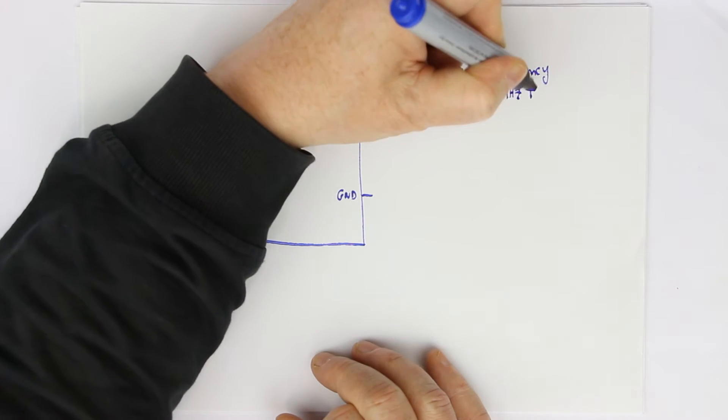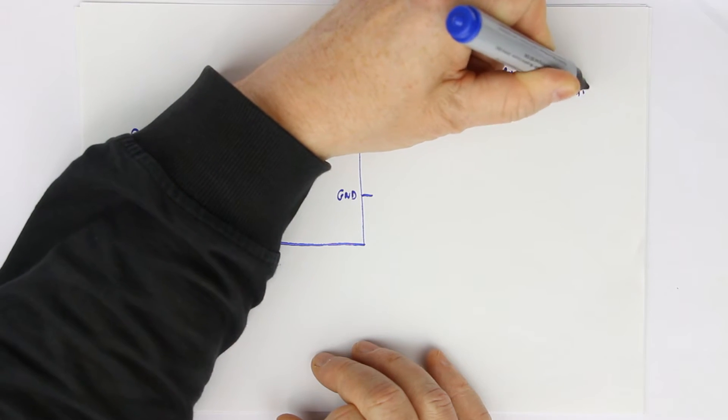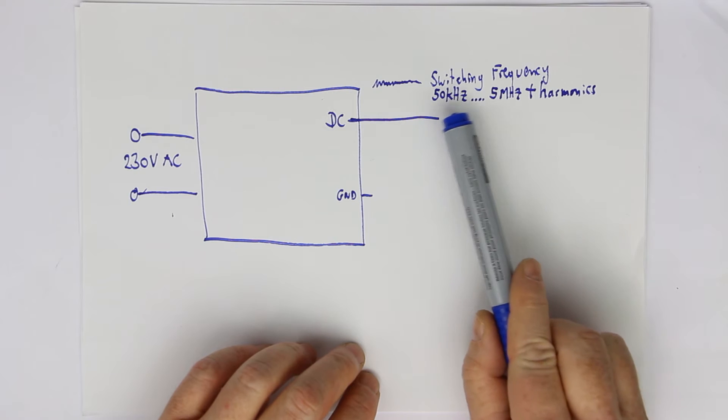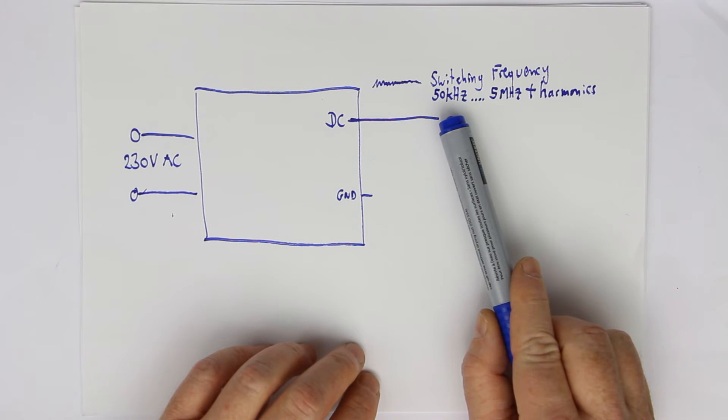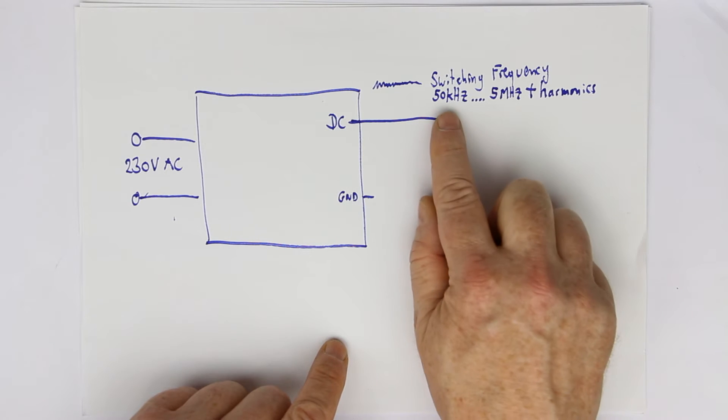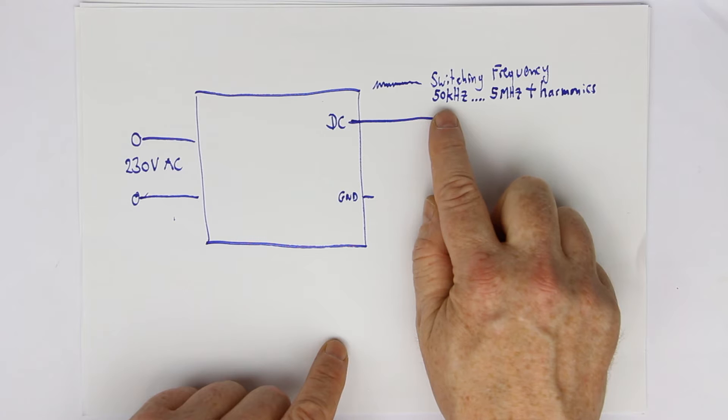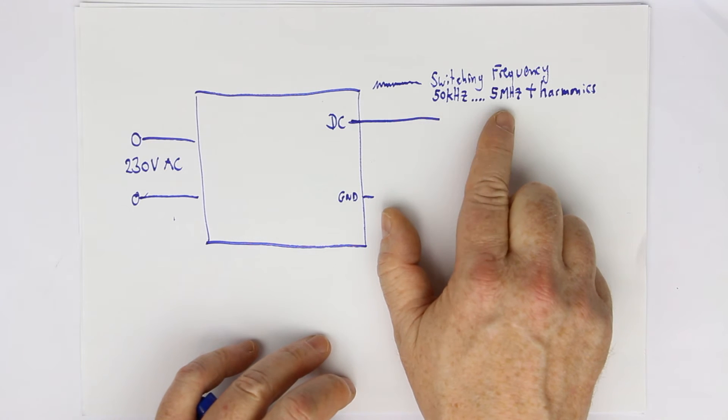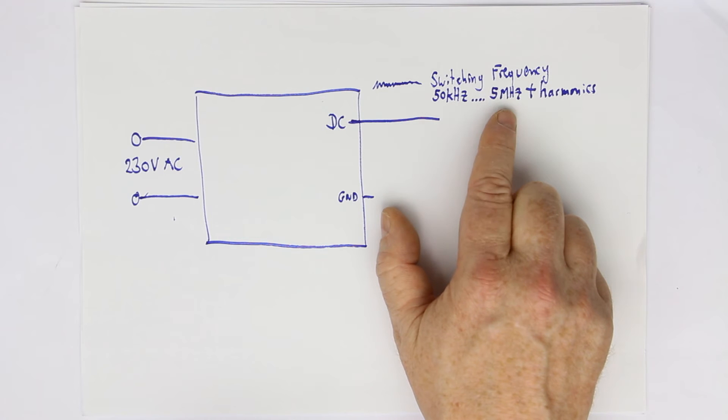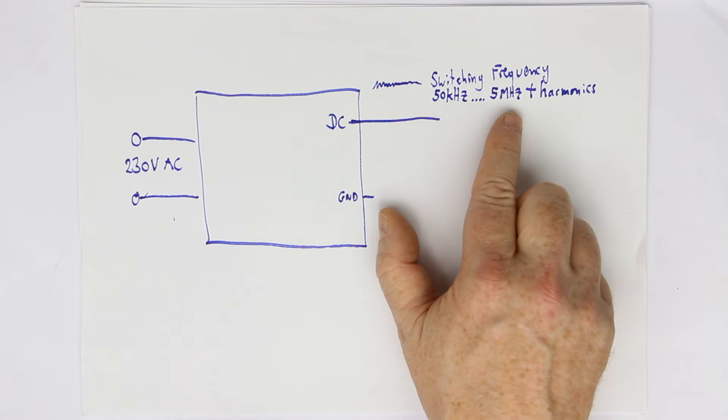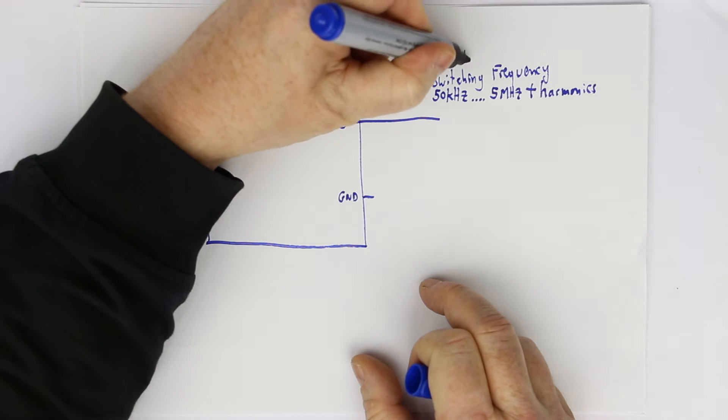And of course the harmonics, because the switching FET is switched on and off hard, which means with a rectangle signal. A rectangle signal has an infinite amount of harmonics. So if you're switching even with a low frequency like 50 kilohertz, you get harmonics up to the megahertz range, even up to the shortwave range. You will hear multiples of the switching frequency in any AM and shortwave receiver. That's the first part of where noise comes from.